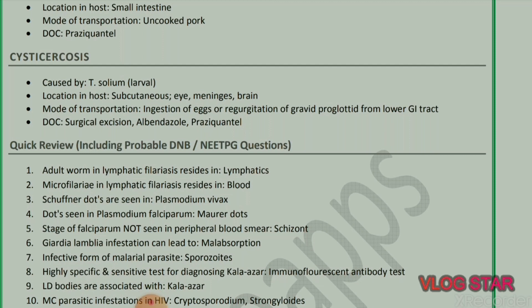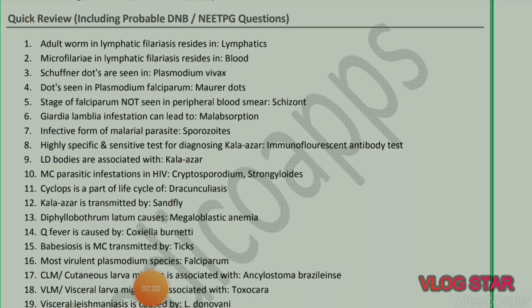Next parasite: Cysticercosis, caused by Taenia solium larvae. Location in host: subcutaneous tissue, eye, meninges, and brain. Mode of transmission: ingestion of eggs or regurgitation of gravid proglottid from lower GI tract. Drug of choice: surgical excision, albendazole, and praziquantel.